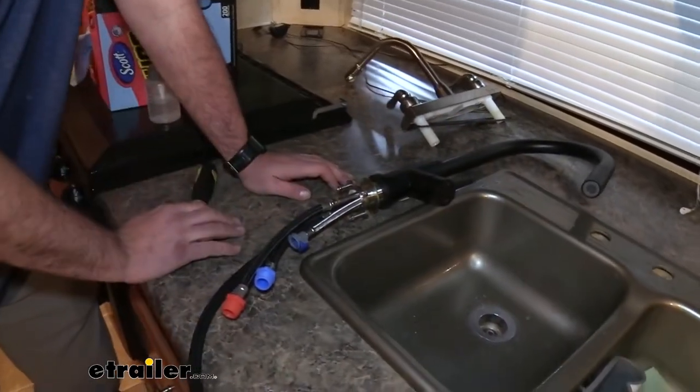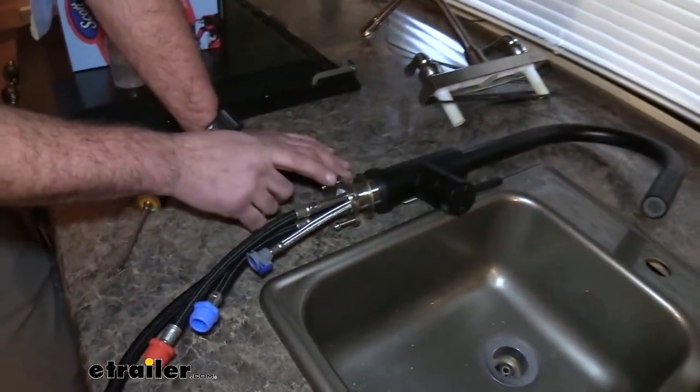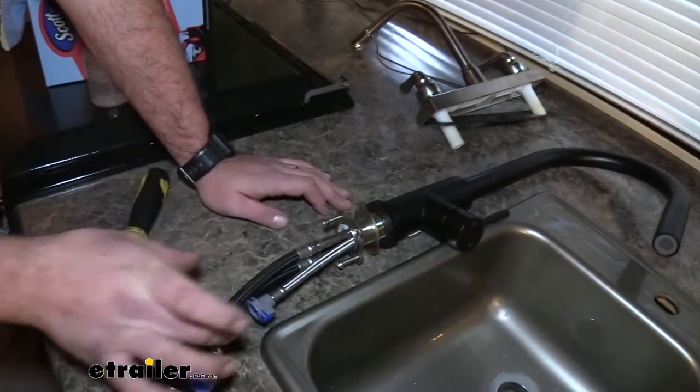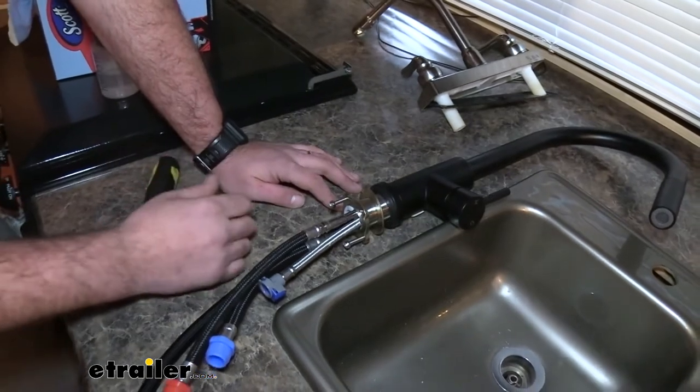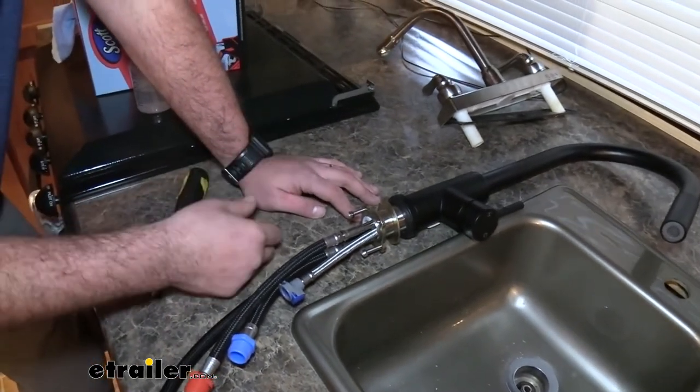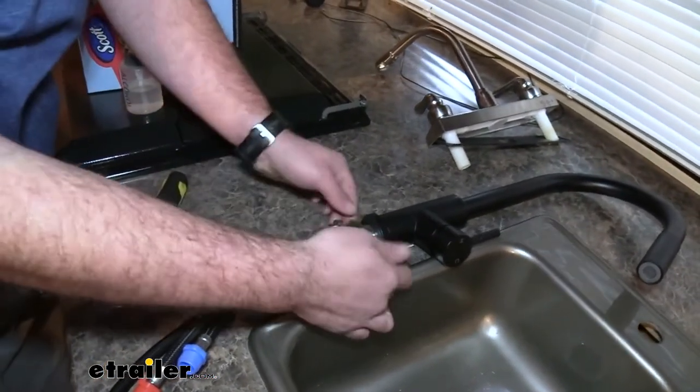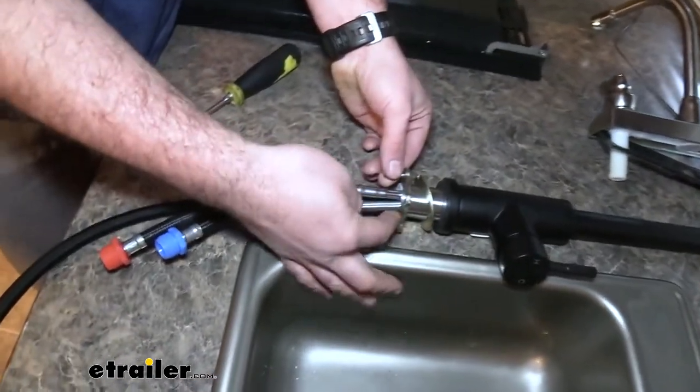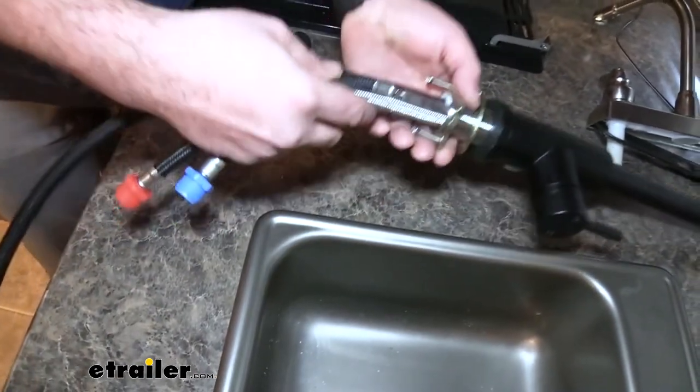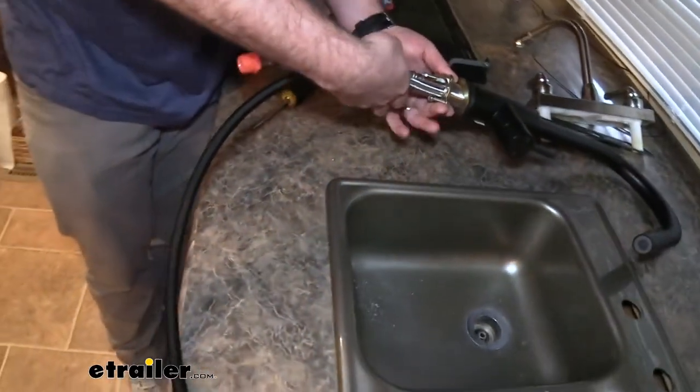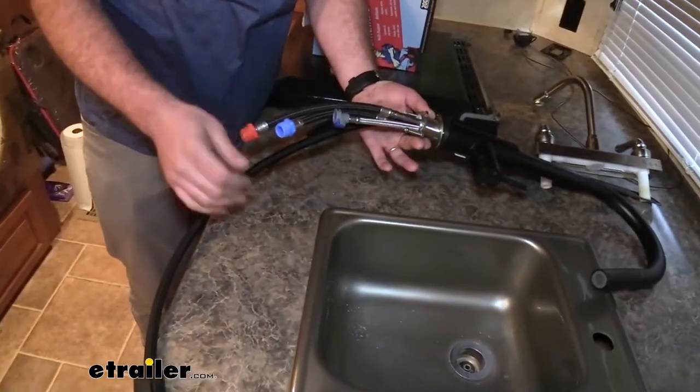Here we have our new Empire faucet and we're going to have to take this collar off as this is going to go underneath the sink and actually clamp this into place. We need to get our washer and our retainer clip off. It is pretty tight here, you can see all of this is meant to go through there but they bunch up quite a bit.